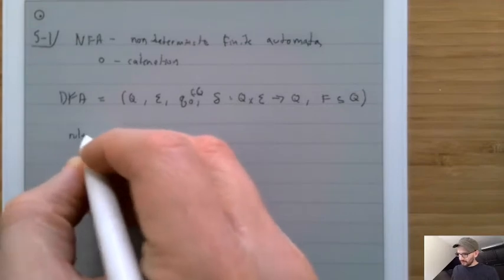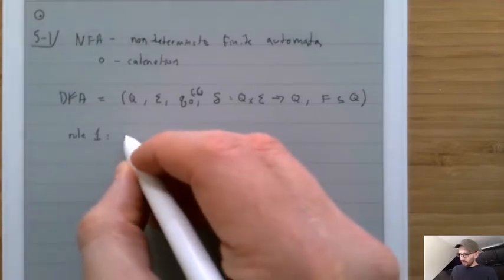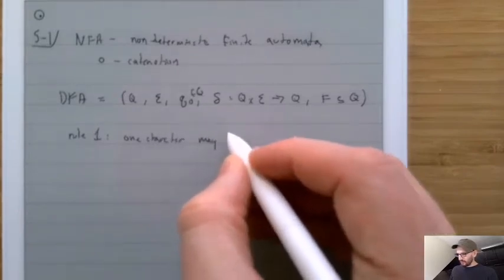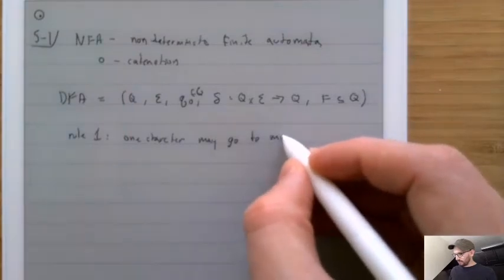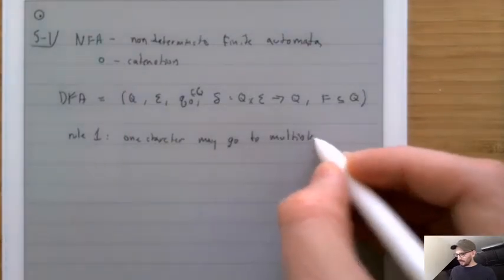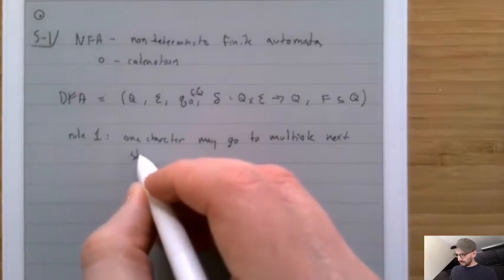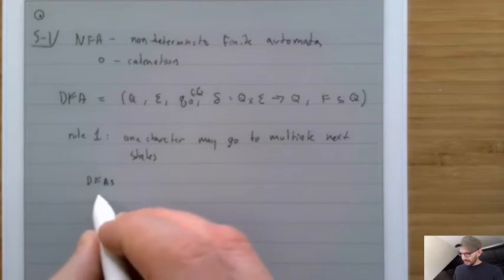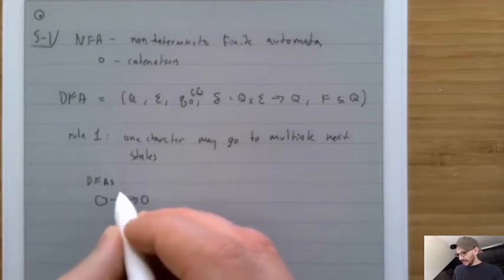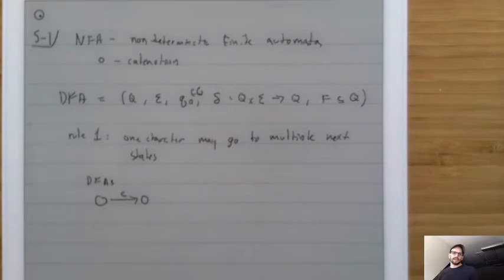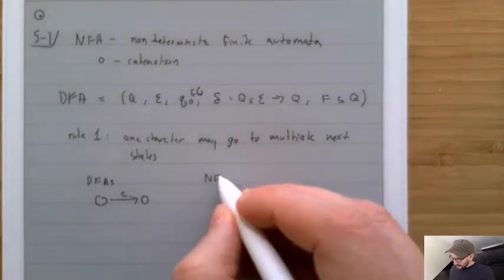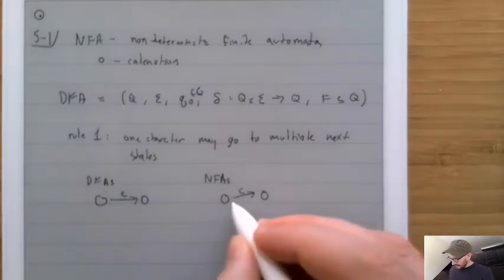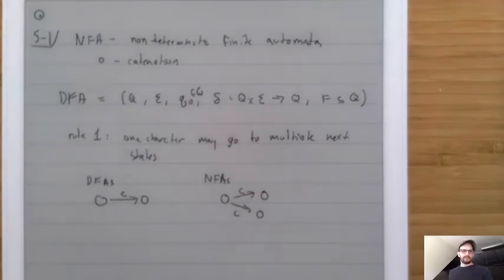Rule number one is that one character may go to multiple next states. With DFAs, it was always the case that we had exactly one next location for a character C. But with NFAs, we can have a start location and it can go one place with a C and another place with a C — two different places.